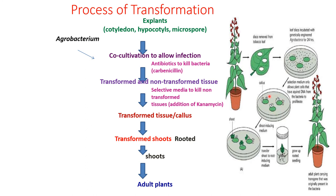The selective medium contains kanamycin, which kills the non-transformants. The transformed plant or callus contains the Ti plasmid, which has a kanamycin resistance gene as a selectable marker. Non-transformants, lacking the plasmid, cannot resist kanamycin and are eliminated. Only transformants survive in this selective medium. The transformed callus is then subcultured to mass-multiply. After that, it is shifted to rooting medium for root production, then to shooting medium for shoot production, and finally the adult plant is transferred to the greenhouse.